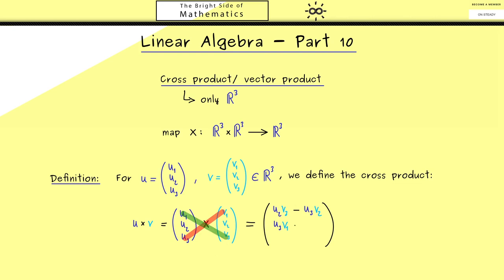For the second component, we start at u3 and go to the top: we have u3 times v1, then mirror to get u1 times v3, and subtract that product with a minus sign. For the third component, we start at u1 and combine u1 with v2, then subtract u2 times v1. So this is one way to remember the formula for the cross product — it looks more complicated than it really is.